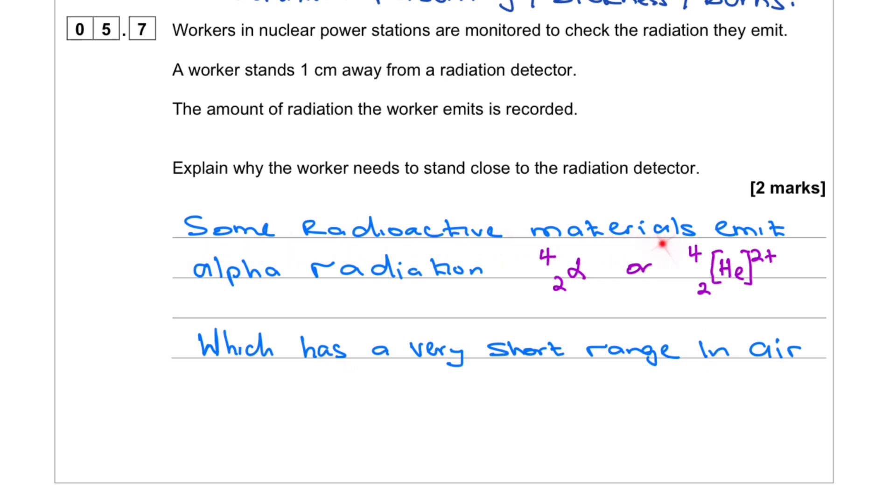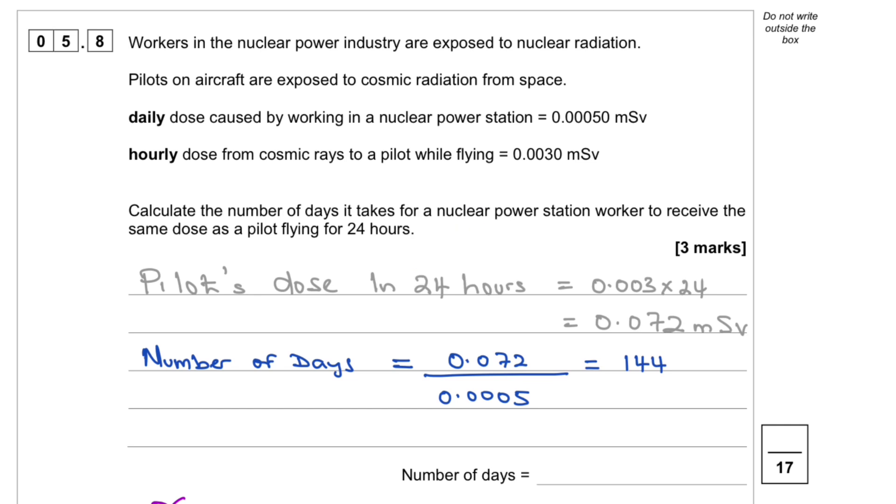Some radioactive materials emit alpha radiation. This is alpha in a physics way. That's how you write it. And in chemistry, this is how you write it. Alpha is helium nucleus which has a very short range in air.